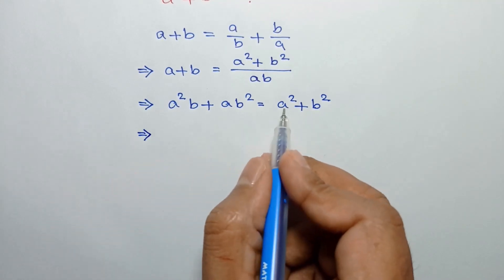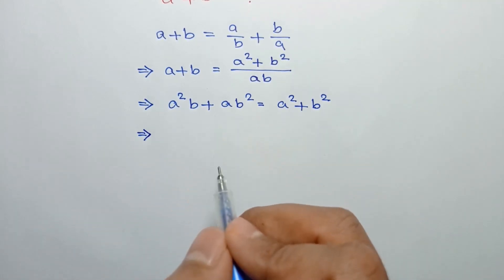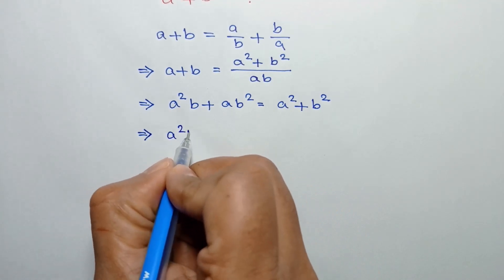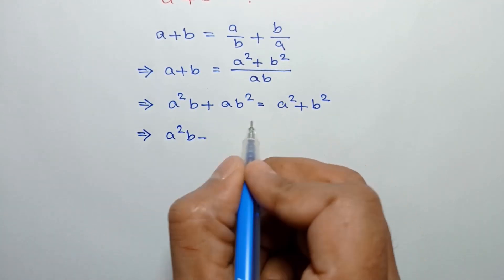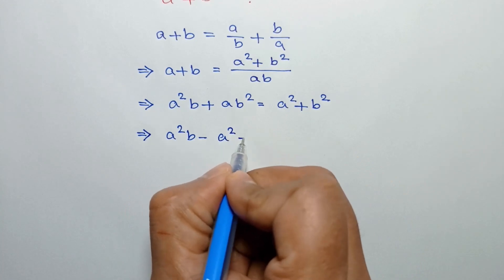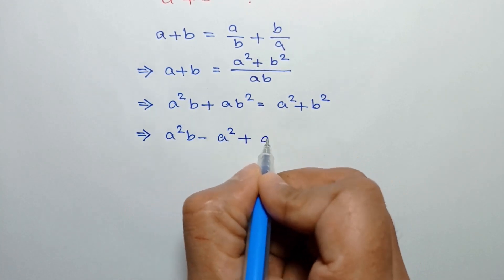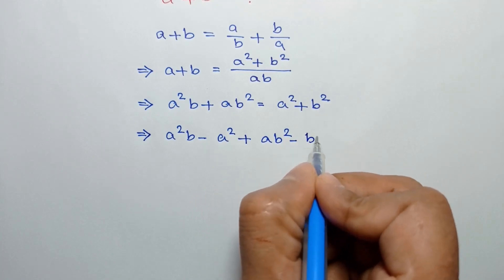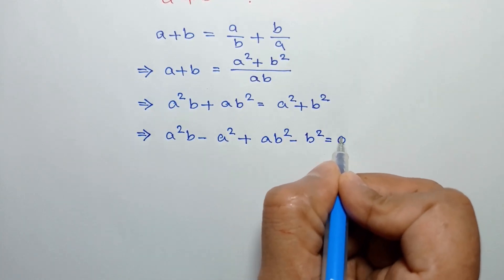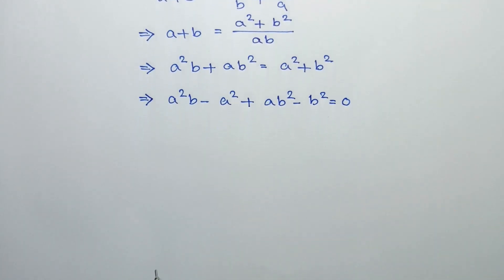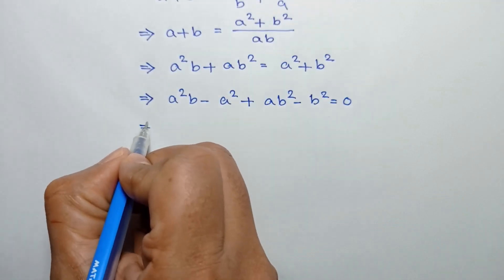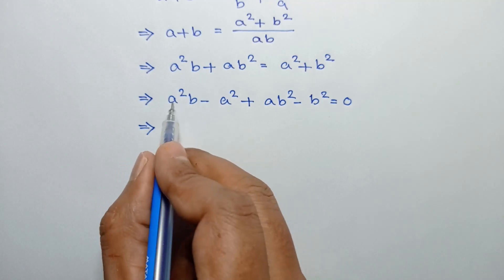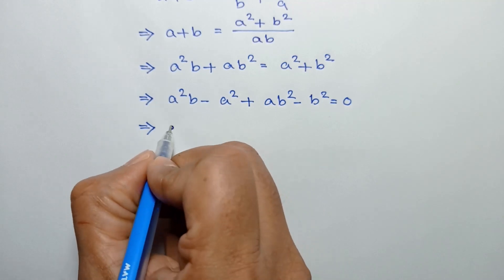Taking the right side to the left, we can write a squared b minus a squared plus ab squared minus b squared is equal to 0.